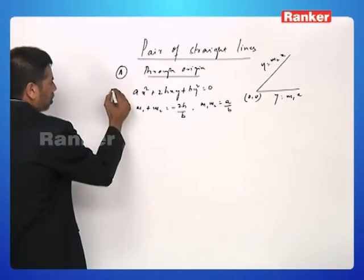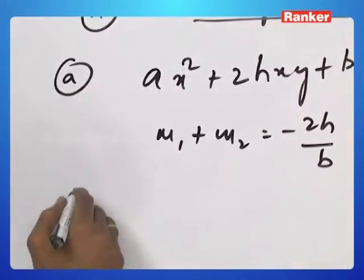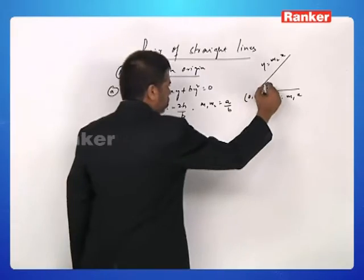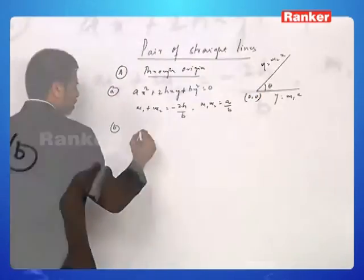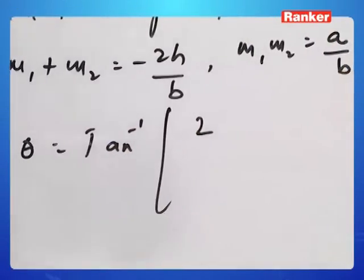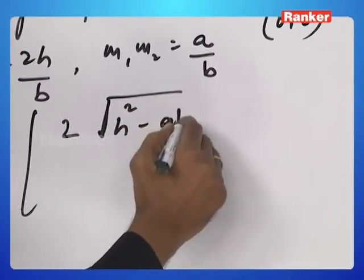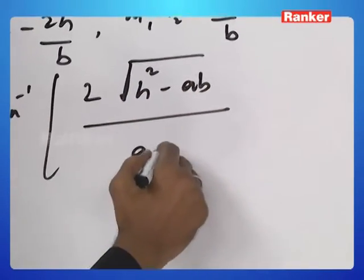This is the basic aspect. The angle between these two straight lines is given by theta equals tan inverse 2 into root h squared minus ab divided by a plus b.